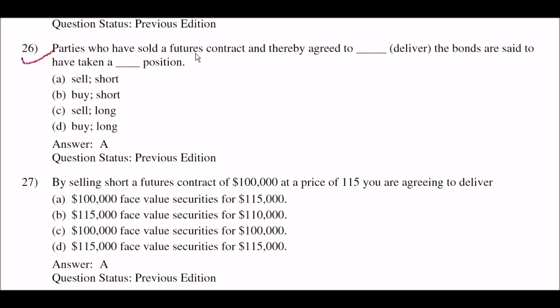Next question: parties who have sold a future contract and thereby agree to [blank] take delivery of the bonds are said to have taken a [blank] position — option A: sell and short respectively; option B: buy and short respectively; option C: sell and long respectively; option D: buy and long respectively. The right answer is option A: sell and short. Parties who have sold a future contract agree to sell and deliver the bonds, taking a short position.